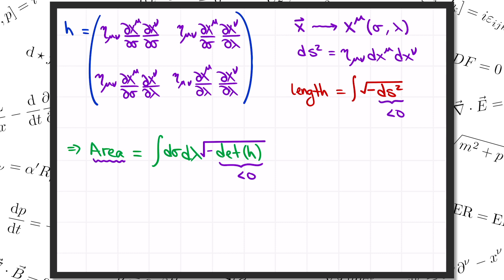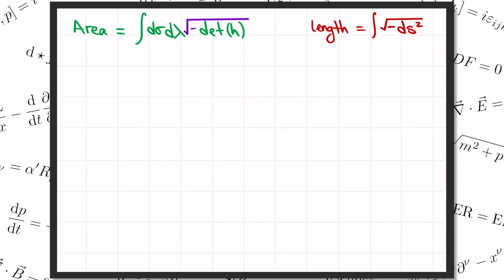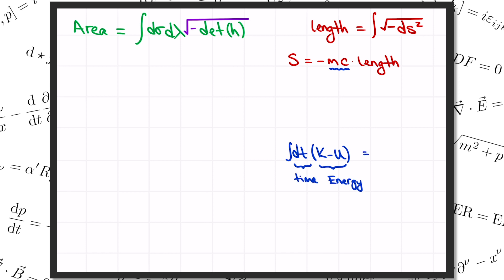So here's our formula for the area of the worldsheet that the string sweeps out as it moves through spacetime. And now we're finally ready to write down the action for our string. For our particle, the action was minus mc times the length of the worldline — those constants had to be there to get the units right. The action has units of energy times time, i.e., kilograms times meters squared per second. In our formula for the particle action, we've got kilograms from the m, meters per second from c, times meters again from the length of the worldline, which indeed gives us kilograms meters squared per second. Now we want to write down the analogous formula for the string action, which is proportional to the area of the worldsheet. There's going to be a constant out front to get the units right, and I'm going to write it as minus T divided by c times the area, where T is some constant whose interpretation we want to understand.